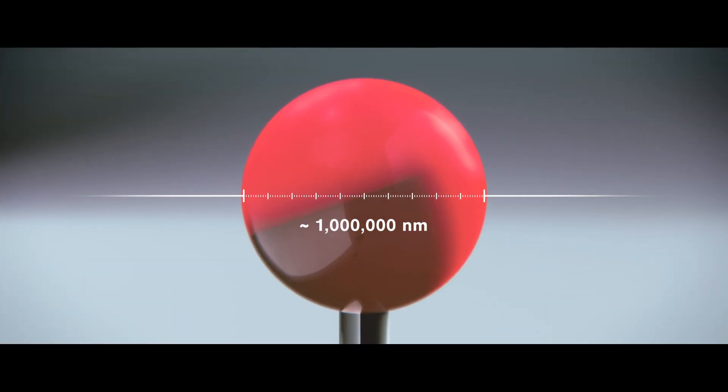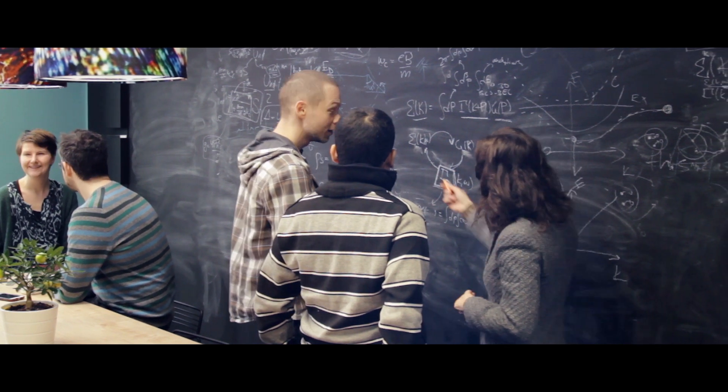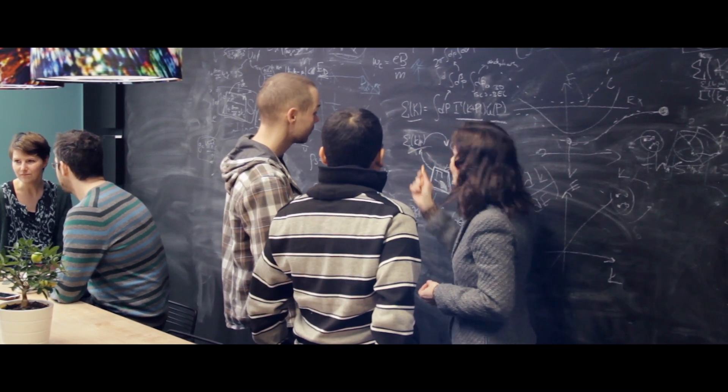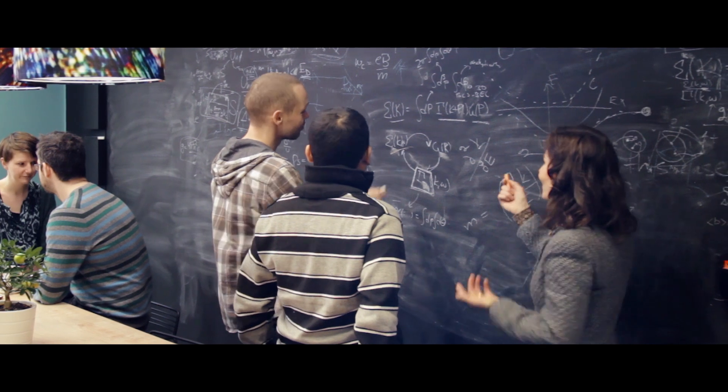One nanometre is one billionth of a metre, and the point of a pin is approximately one million nanometres wide. Nanoscience, which is a relatively new field of research, aims to understand the matter properties on the nanoscale.